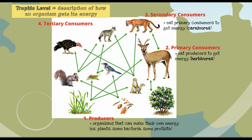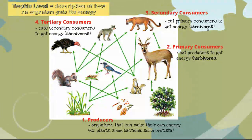Tertiary consumers are third-level consumers. They're going to eat secondary consumers to get their energy. So if the mountain lion were to eat the fox, or the fox were to eat the scrub jay, then they would be tertiary consumers. They're also called carnivores — anything that is eating other animals is going to be considered a carnivore, but they're at different levels depending on which specific animals they're eating.